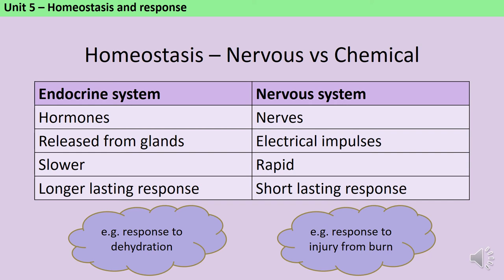One key challenge that the body has to overcome in homeostatic control is that the receptor cells, the coordination center, and the effector organs may all be in different parts of the body and yet have to share information even though they're quite far apart. This is done using two key systems: the endocrine system and the nervous system. The endocrine system passes information using hormones — chemical messengers that are secreted by glands and transported in the blood. The nervous system sends information in the form of electrical impulses which travel along the nerves.